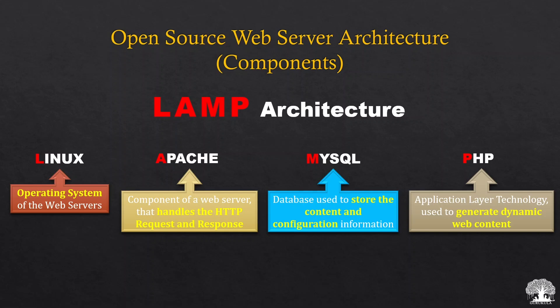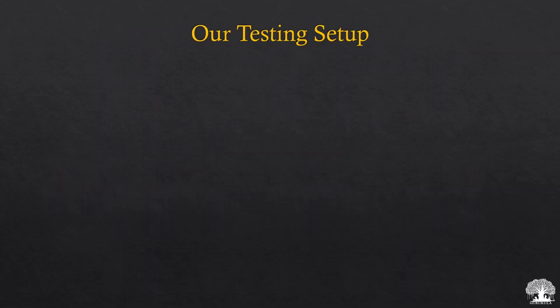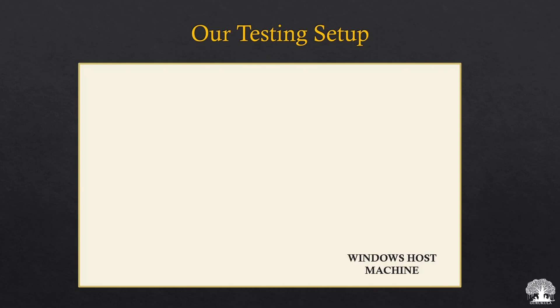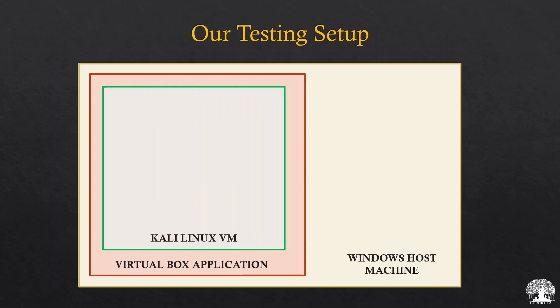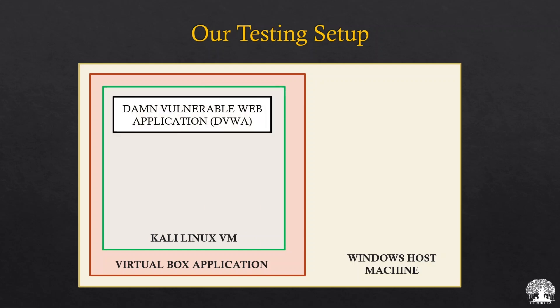In this particular video we are not going to develop any web application from scratch. We already have a web application developed using PHP, and we are going to make use of DVWA — Damn Vulnerable Web Application — which we are going to clone from GitHub. Our testing setup consists of a Windows host machine running VirtualBox, inside which we set up a Kali Linux VM, and we deploy DVWA inside that Kali Linux.